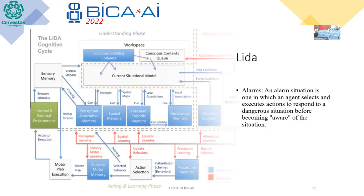An alarm situation in LIDA is when an agent selects and executes an action to respond to a dangerous situation before becoming aware of the situation. That means if there is a dangerous situation, LIDA does a free pass to perform an action, but no model orders cognitive functions to trigger this alarm — it just performs an action.